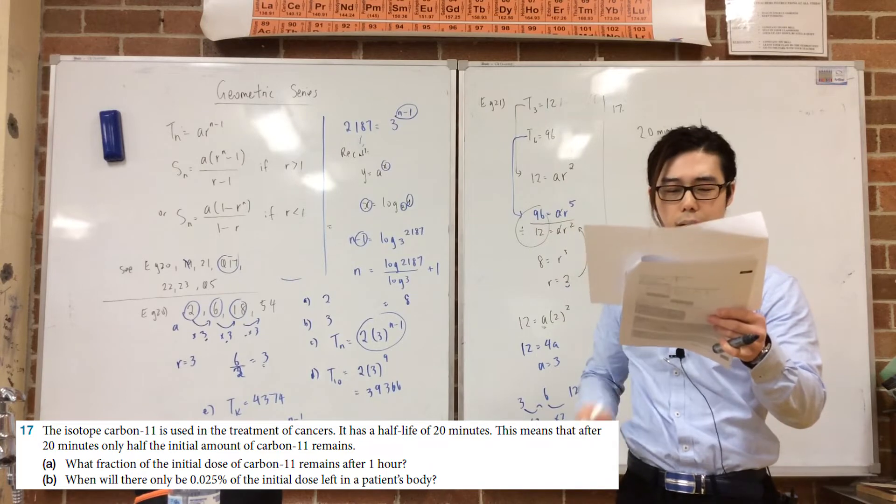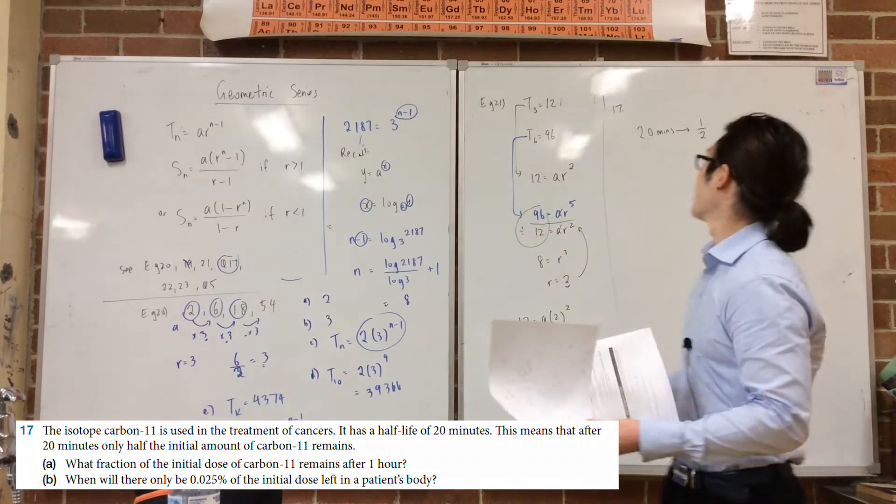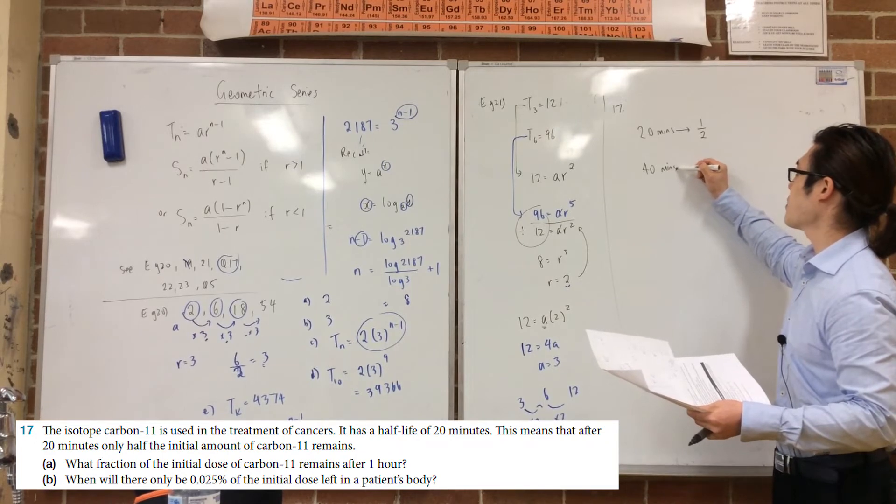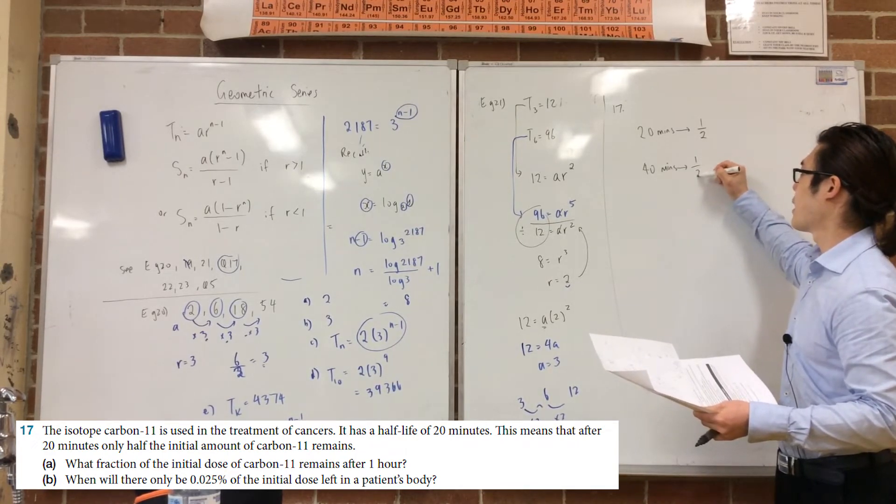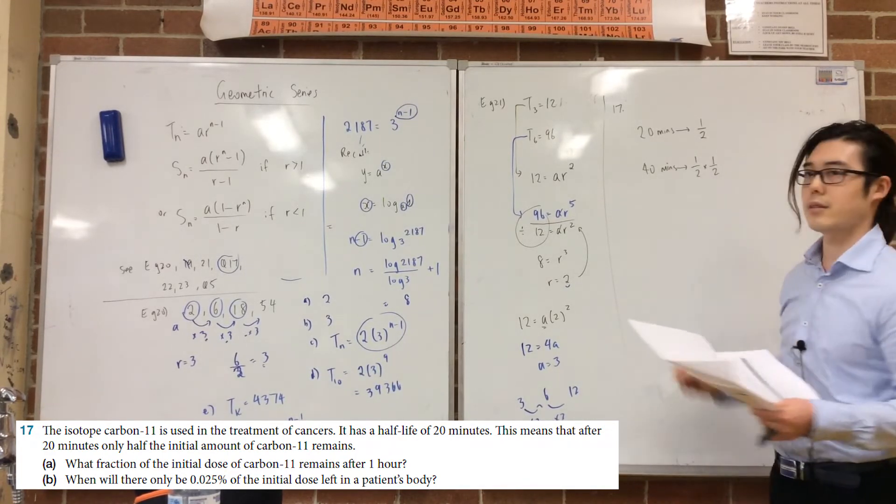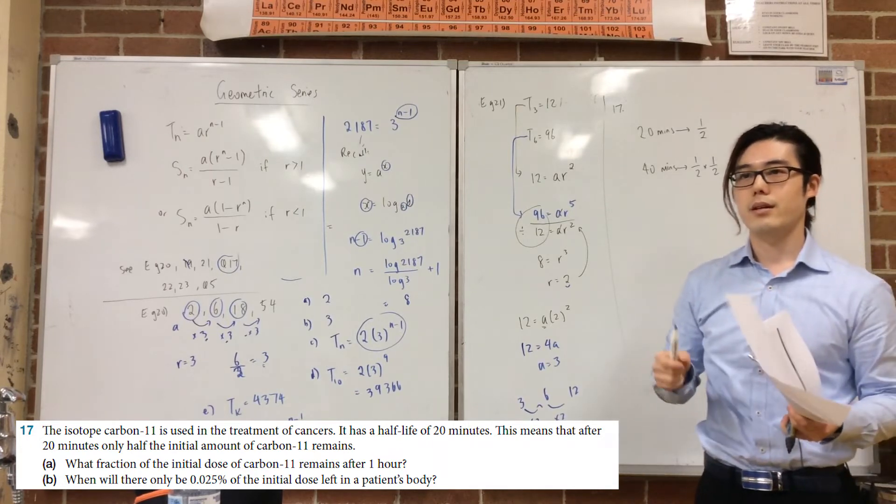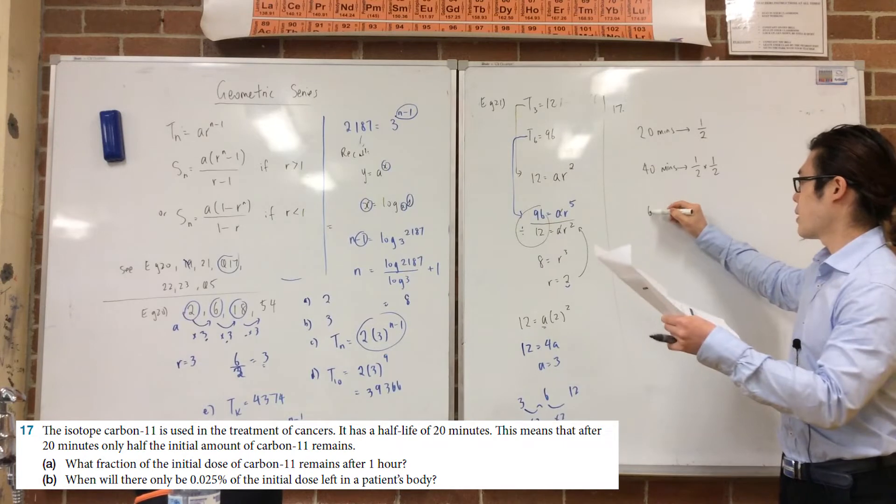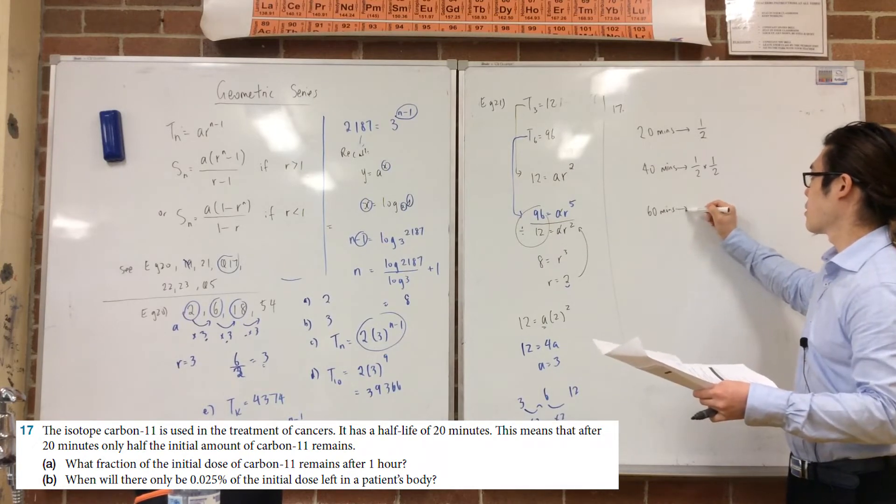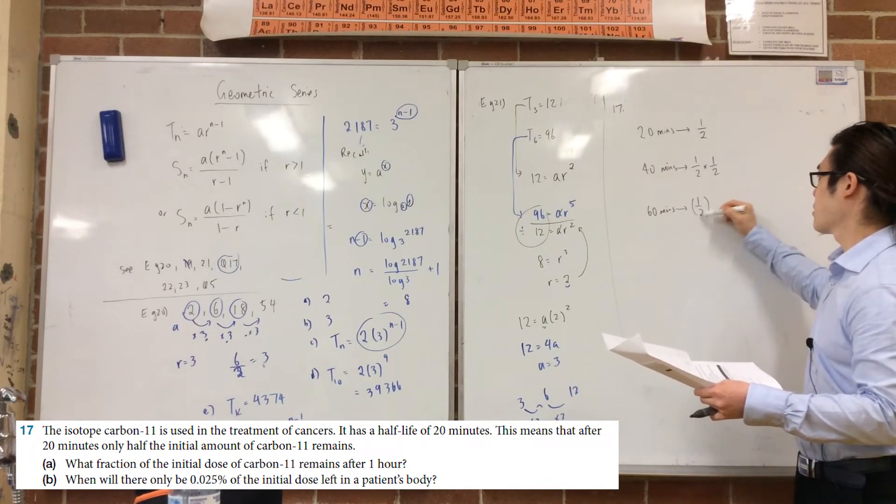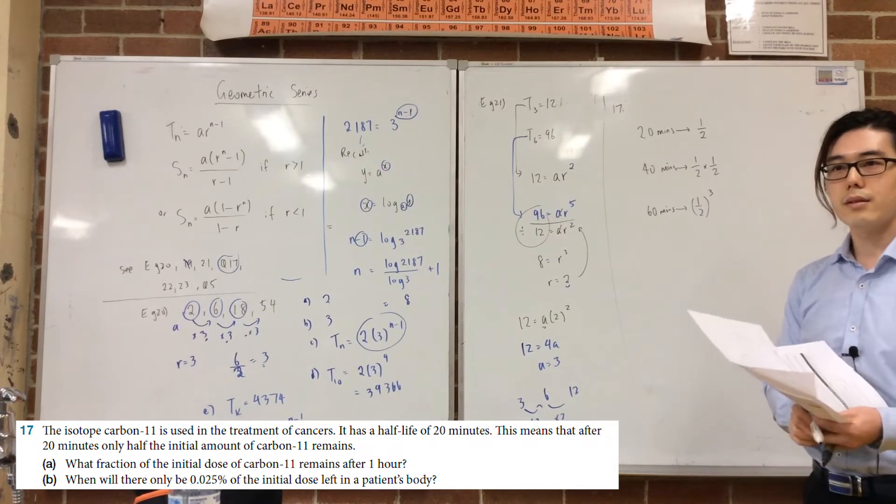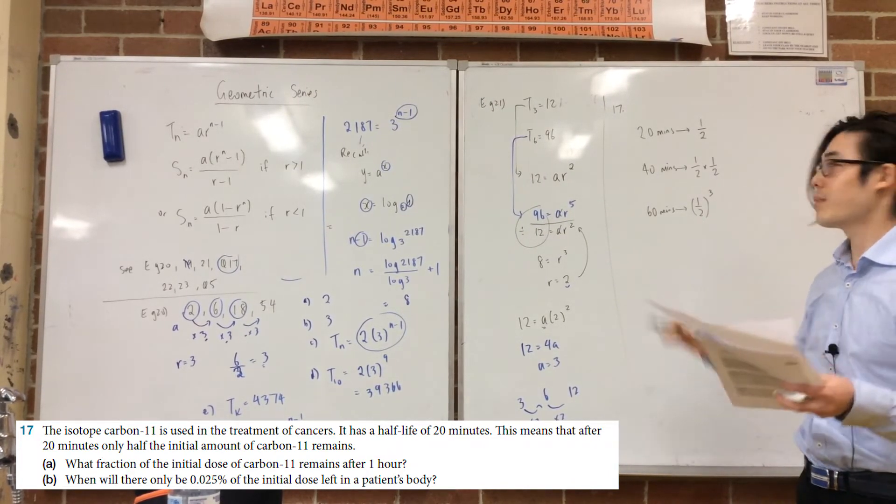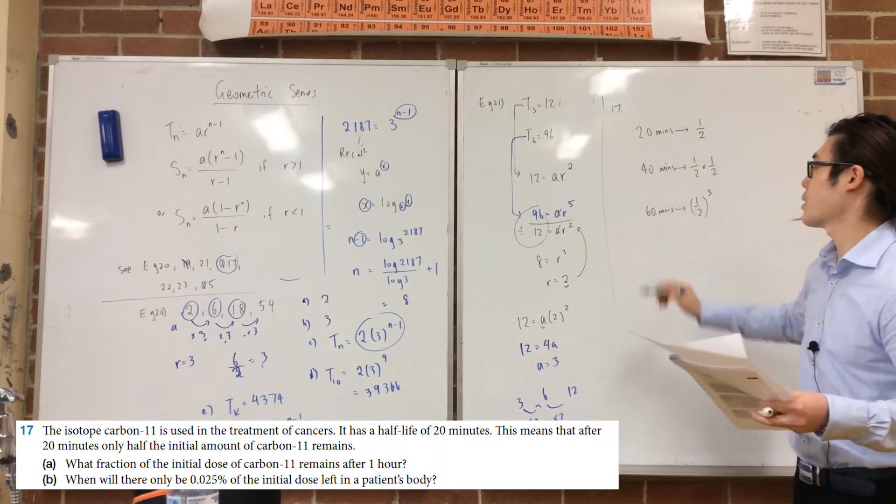What fraction of the initial dose of carbon-11 remains after one hour? So here's how you've got to look at it. Girls, after 40 minutes, it's going to be half times another half, isn't it? Because every 20 minutes, only half of it remains. So if I want it for 60 minutes, that's basically this. So that's actually how you do that first question, which isn't bad.